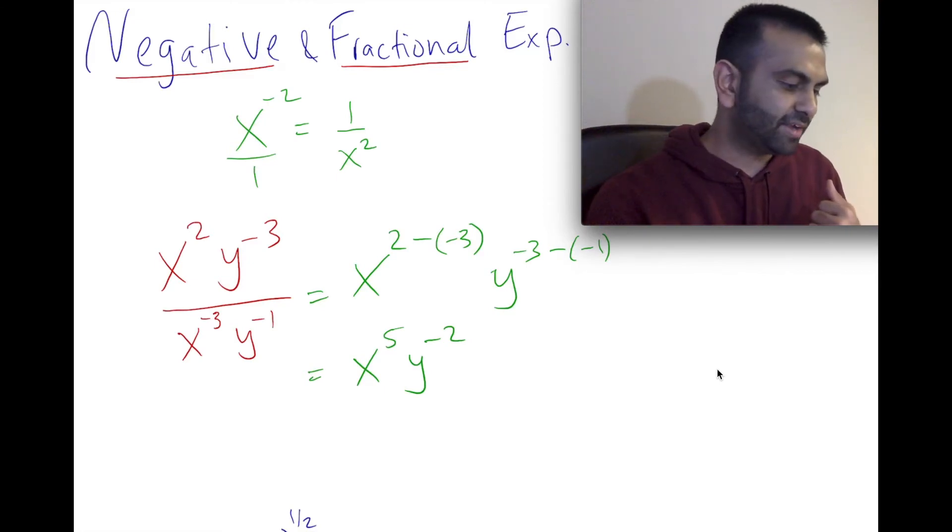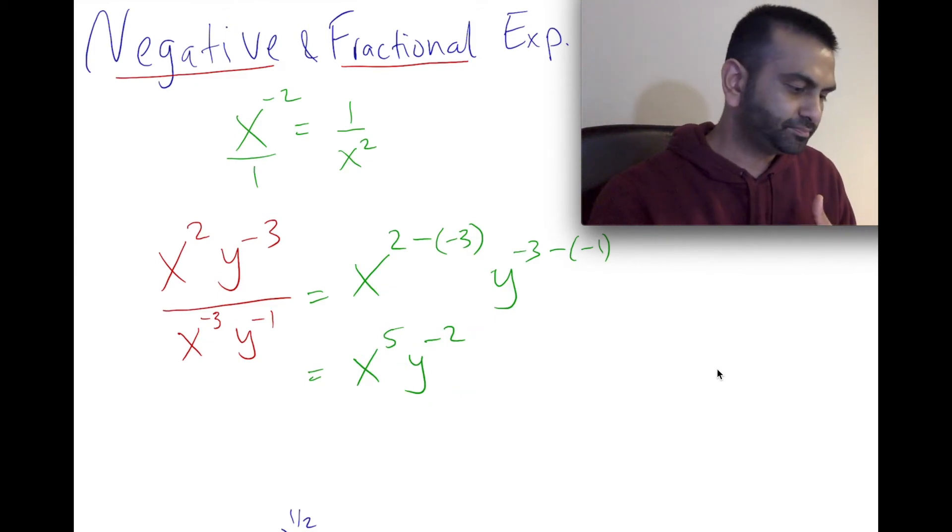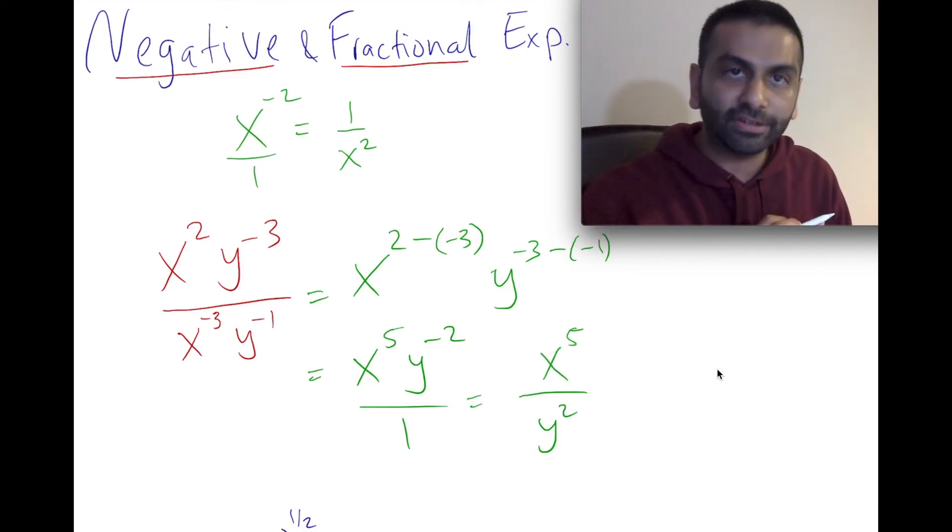That's what this whole thing simplifies to. And if we wanted to rewrite this without a negative exponent, we've got to send this y to the negative 2 across the border. There is nothing in the denominator currently. So if we send that down, the y to the negative 2 just becomes y to the positive 2. And the top, the x to the fifth, can just stay there. So that's what that would simplify to.